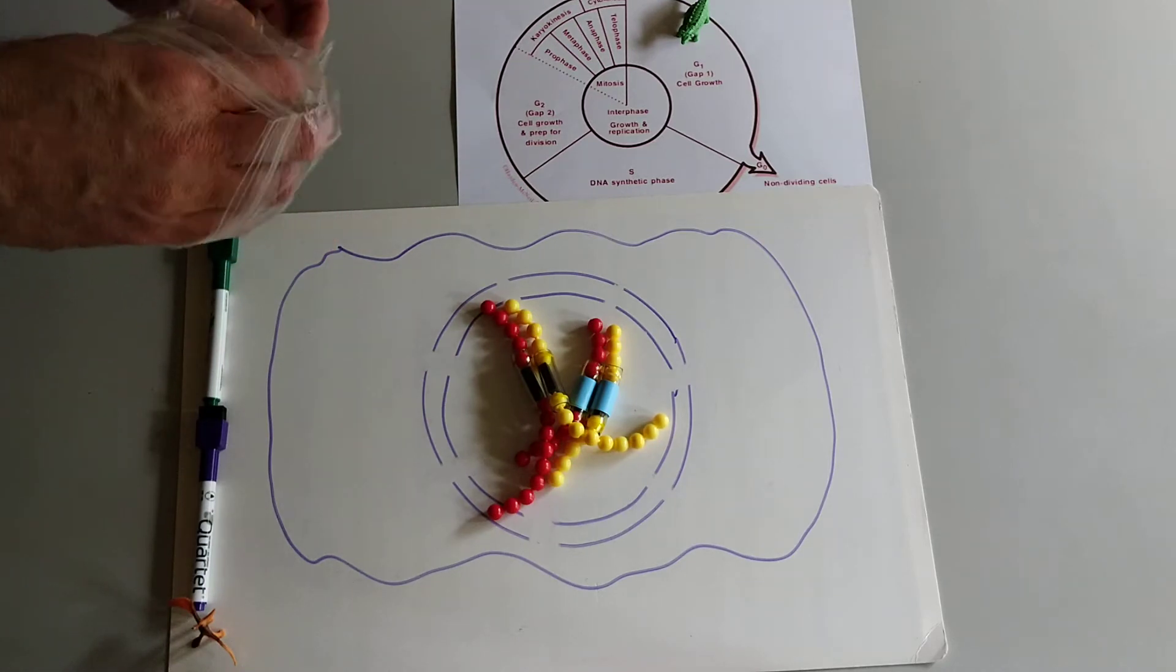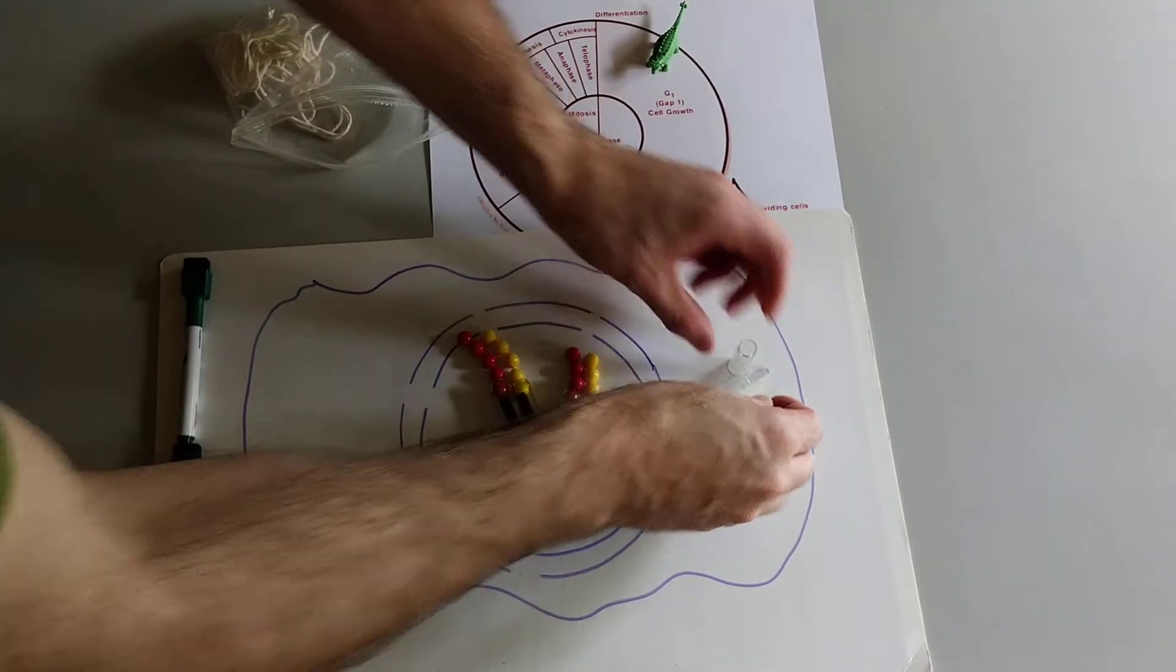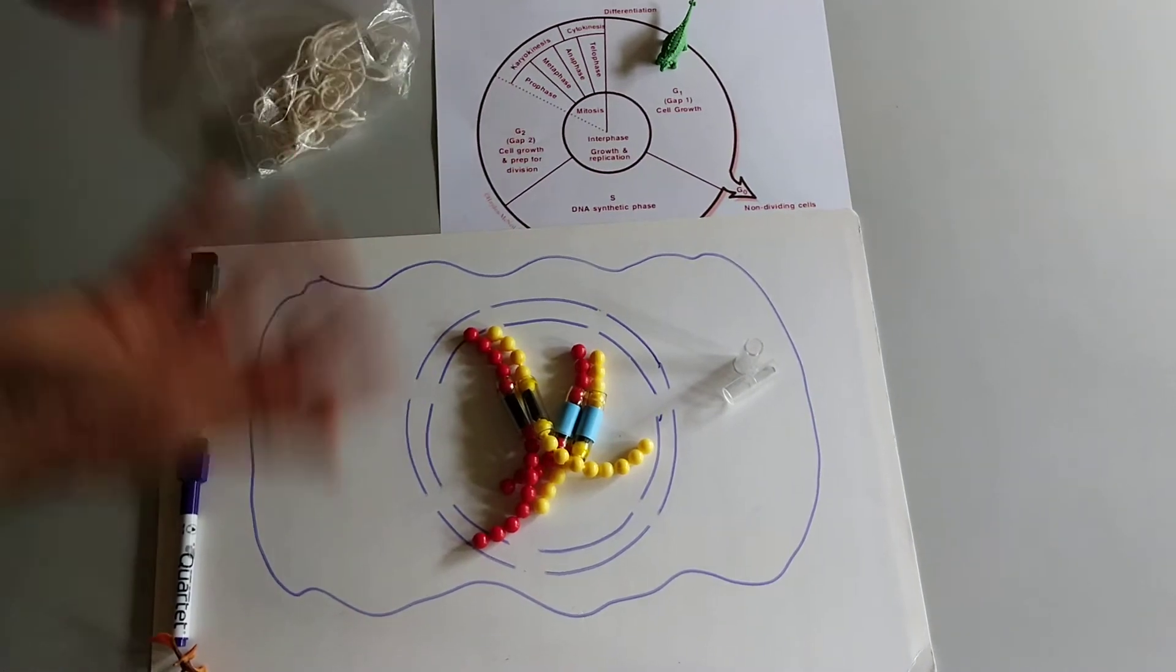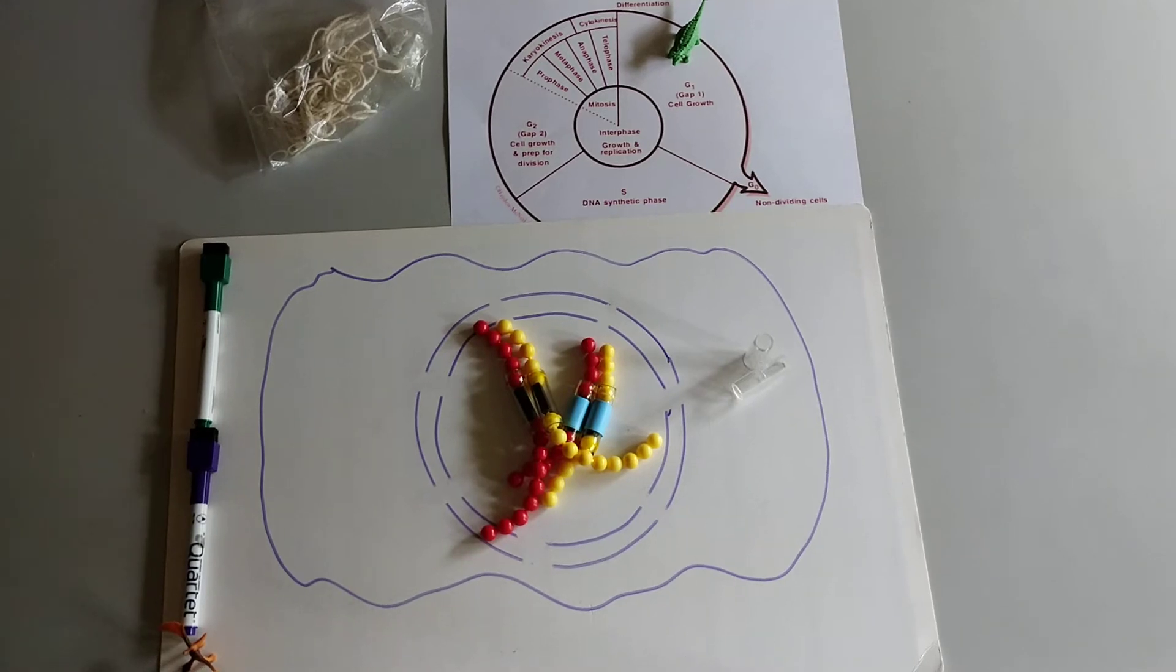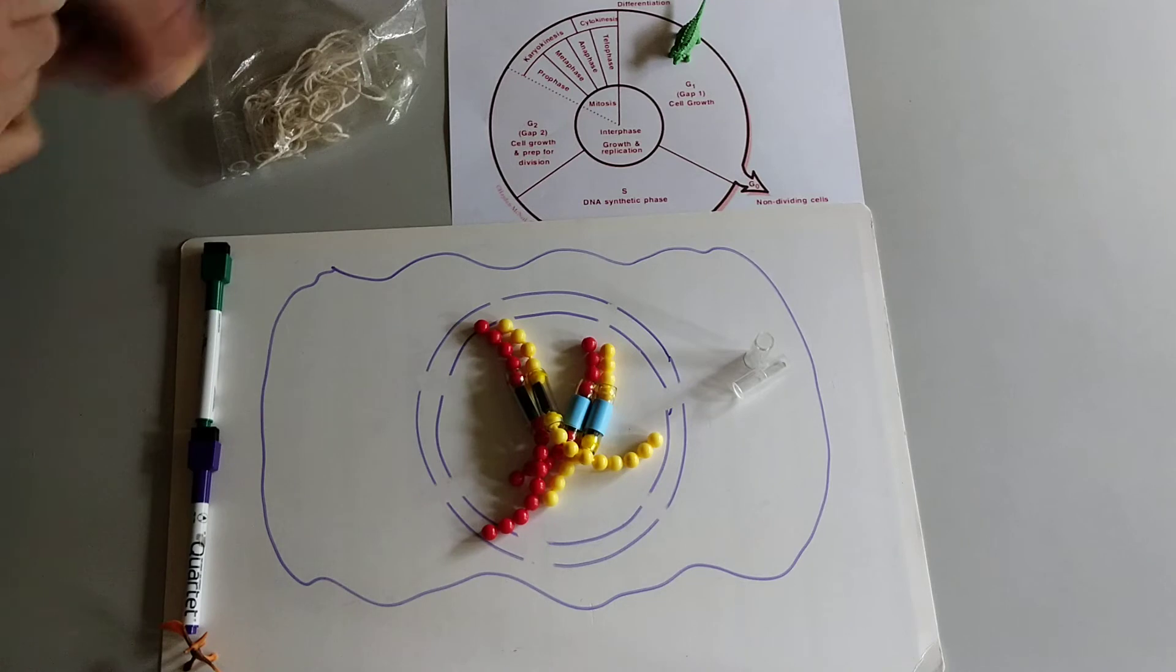The cell is also going to have a pair of centrioles to make up the centrosome. I'm just going to put those right over there for now. And this is our cell in G1 of interphase. It's just going about its normal business doing whatever this particular cell needs to do.